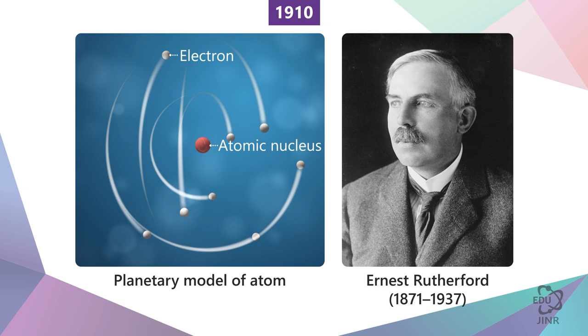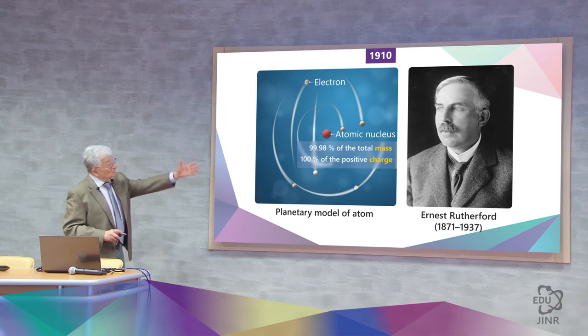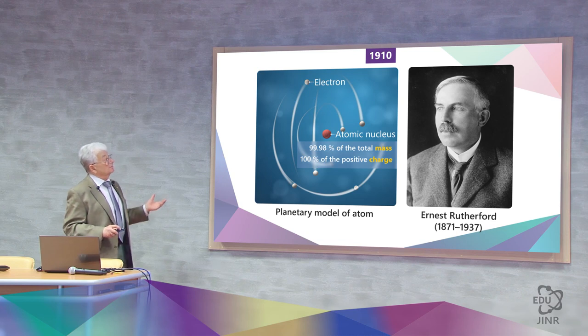This assumption, as always in the scientific community, was met with skepticism. Rutherford was not really believed, despite the fact that he suggested it was very similar to how the planets revolve around the Sun. The nucleus mass is 99.98% of the atom and contains 100% positive charge. Nevertheless, the image that Rutherford described was called the planetary model of the atom.